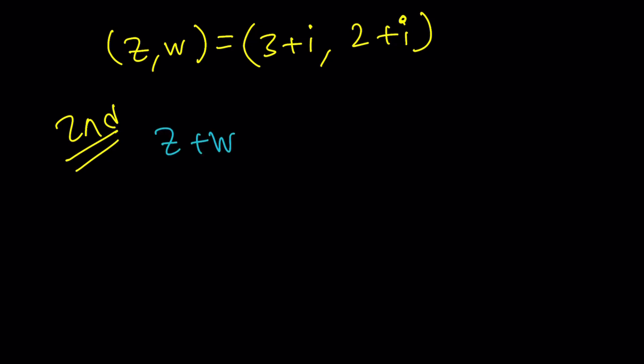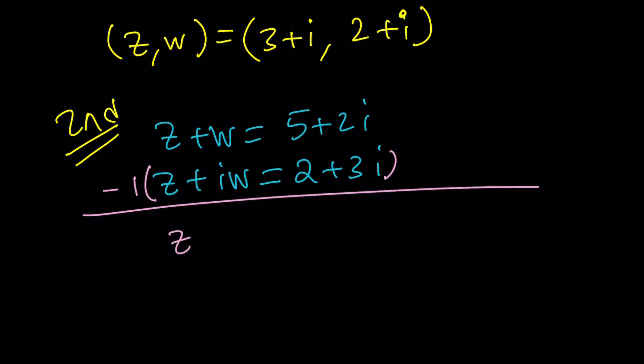z plus w equals 5 plus 2i. And then z plus iw equals 2 plus 3i. Now the second method is going to be elimination. How do we eliminate and what do we eliminate? You kind of need to pick a good candidate. In this case z happens to be a good one. So I'm going to go ahead and negate the second equation. In other words multiply everything by negative 1 and then add it to the first equation. The first equation will stay the same. Let me just go ahead and copy the second one right here. Negative z minus iw equals negative 2 minus 3i.